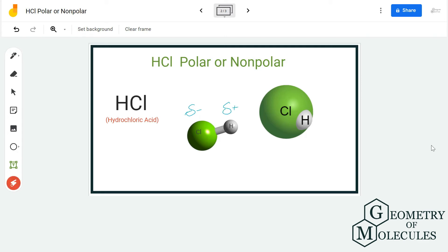As there is unequal charge distribution in this molecule and unequal sharing of valence electrons, HCl is a polar molecule.